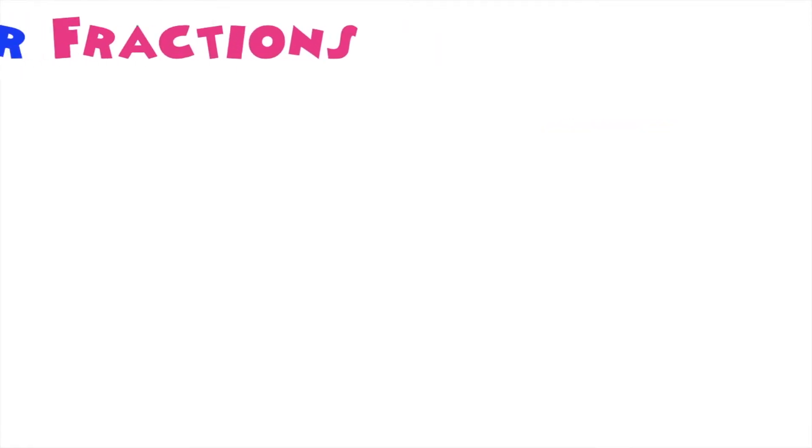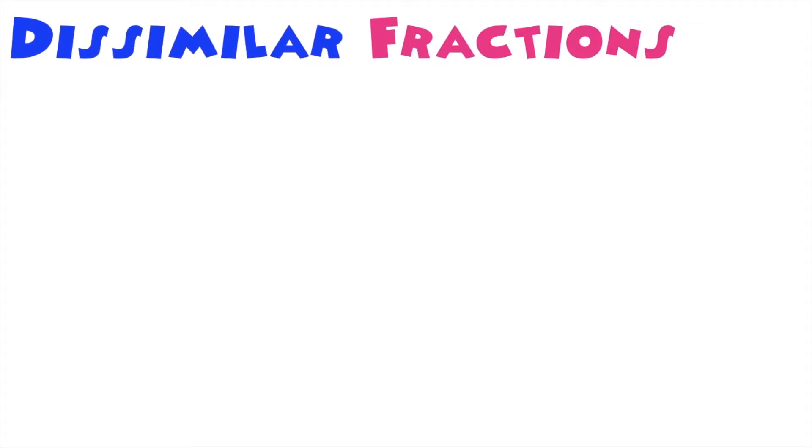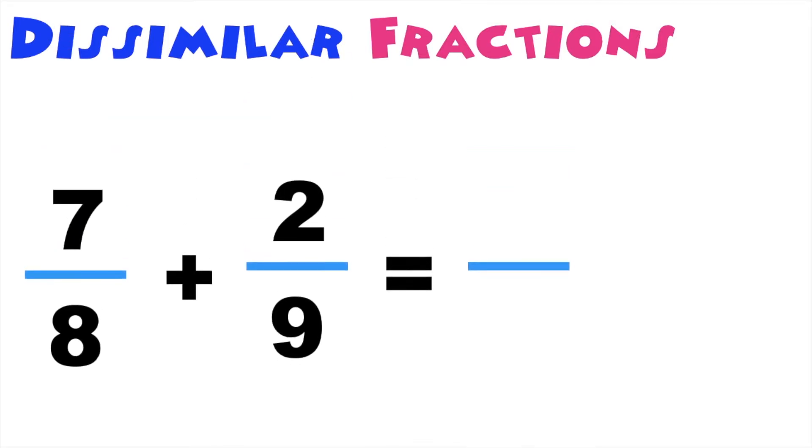How about if we have dissimilar fractions? When you say dissimilar fractions, their denominators are not the same. So we have here 7 over 8 plus 2 over 9. When able to solve this, we're going to use the butterfly method.